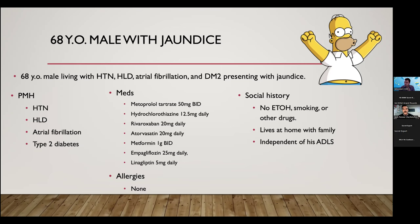Excess production of unconjugated bilirubin can come from something like hemolysis, whereas hepatobiliary disease — associated with hyperbilirubinemia — can be thought of as either intrahepatic cholestasis or extrahepatic cholestasis. In other words, there is a problem intrinsic to the liver itself that leads to difficulties processing bilirubin, or there may be something within the biliary ductal system leading to biliary ductal obstruction, and as a result, a backup of bilirubin into the bloodstream.